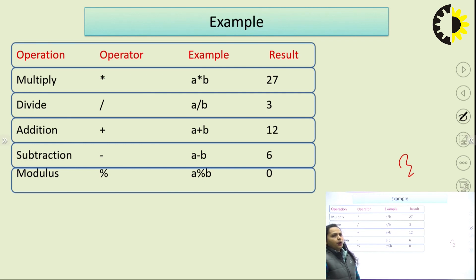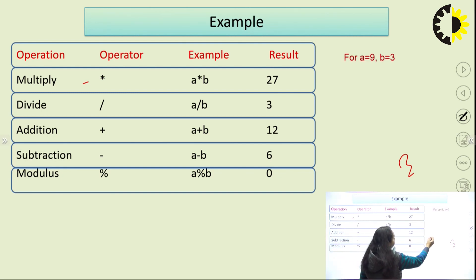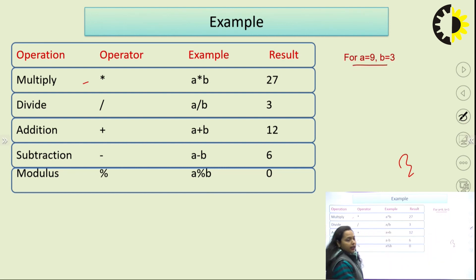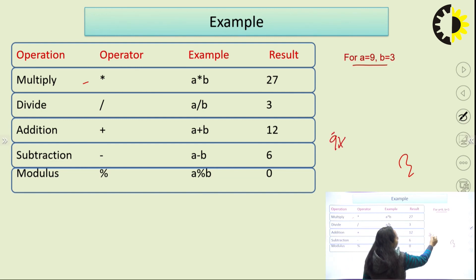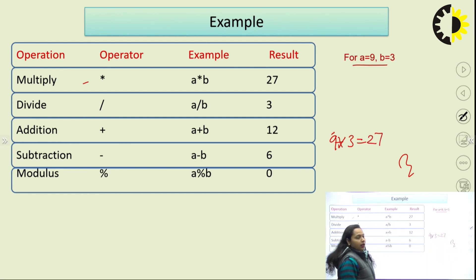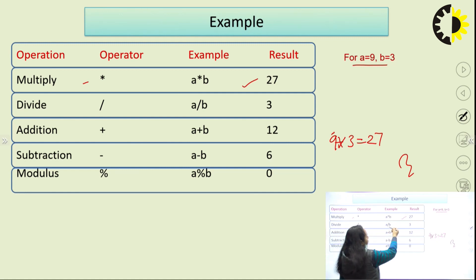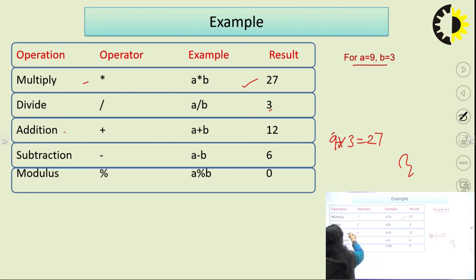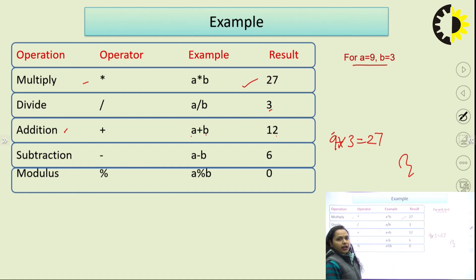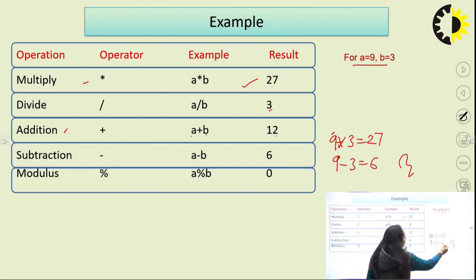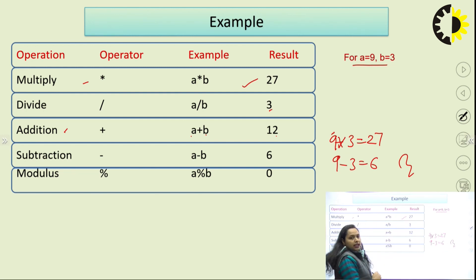Let us take an example. If a equals 9 and b equals 3, then a multiplied by b is 9 into 3, which is 27 — that is the multiplication operator. For division, a divided by b is 9 divided by 3, which gives 3. For addition, a plus b is 9 plus 3, which equals 12.